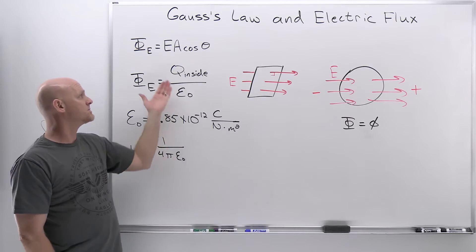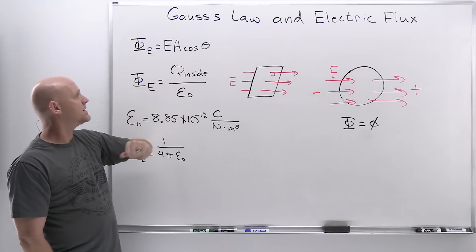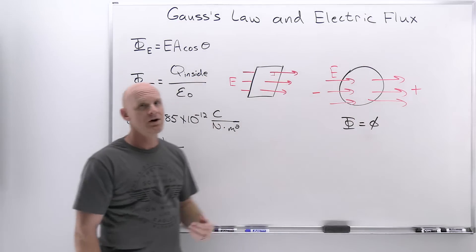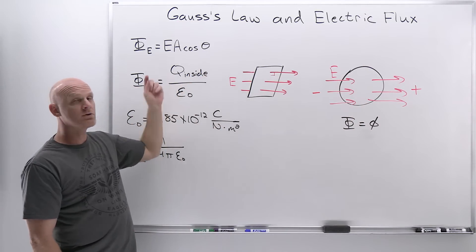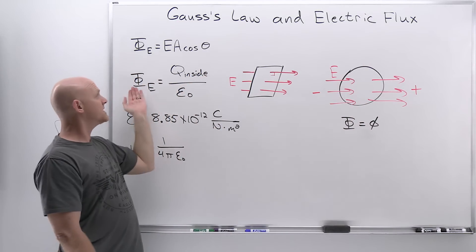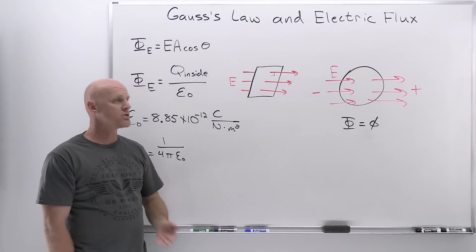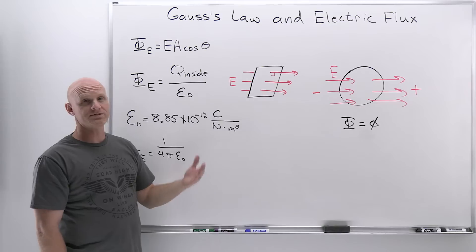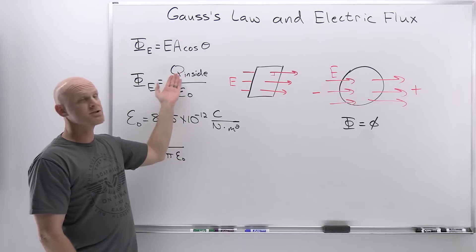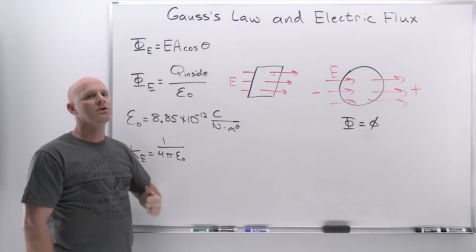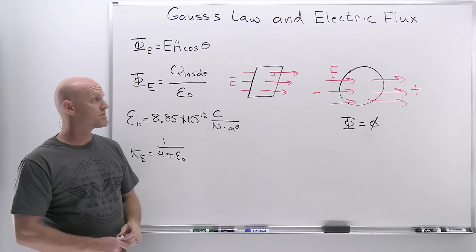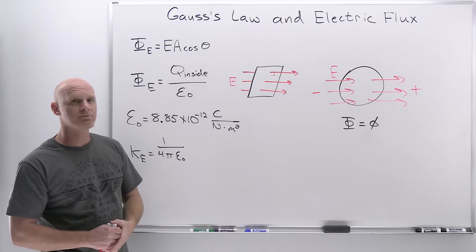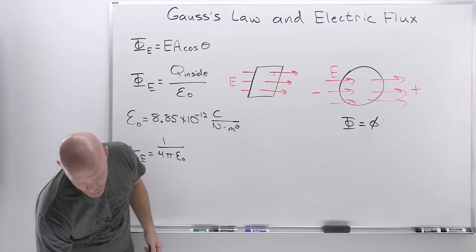What this shows is that if there is no enclosed charge inside a closed surface, the net electric flux is zero — consistent with the sphere example we just saw. And if you do know the total enclosed charge, Gauss's Law gives a very simple formula for calculating the net electric flux through that closed surface.